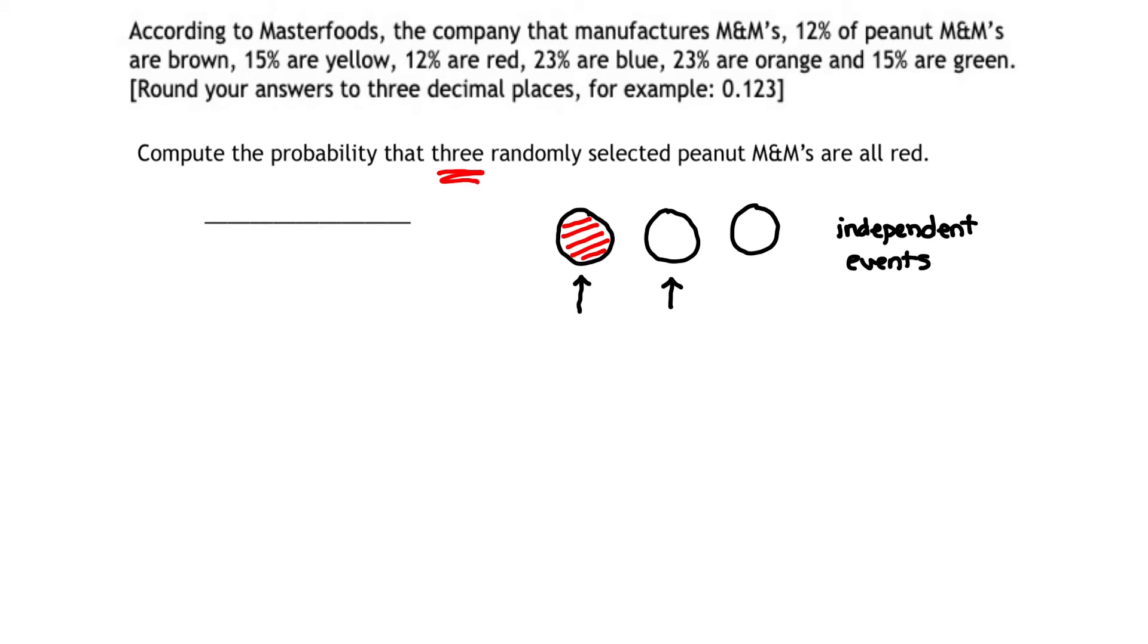So when I select that first M&M, what is the probability that it will be red? Well, that probability is 0.12, or 12%, right?